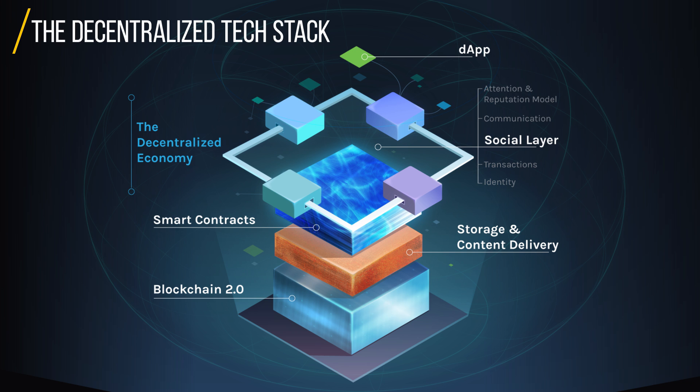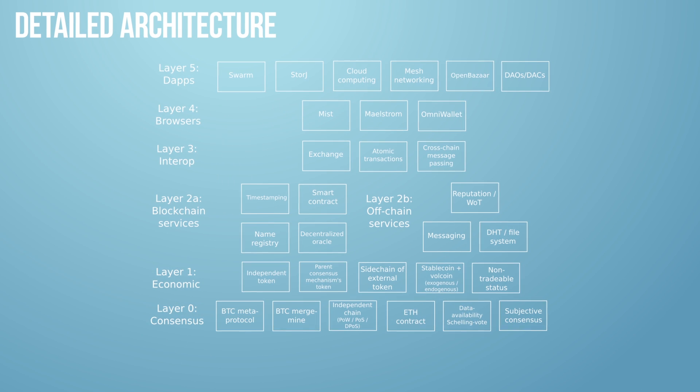This may sound extremely unfamiliar at this point, but as we start stepping through the classes you'll feel more and more in control. Here is a very detailed architecture diagram of different layers. Layer five is storage and compute. Layer four is where the wallets live — how you store Ether. Layer three is interoperability with cross-chain messaging. Layer two has pieces like smart contracts and decentralized oracles.